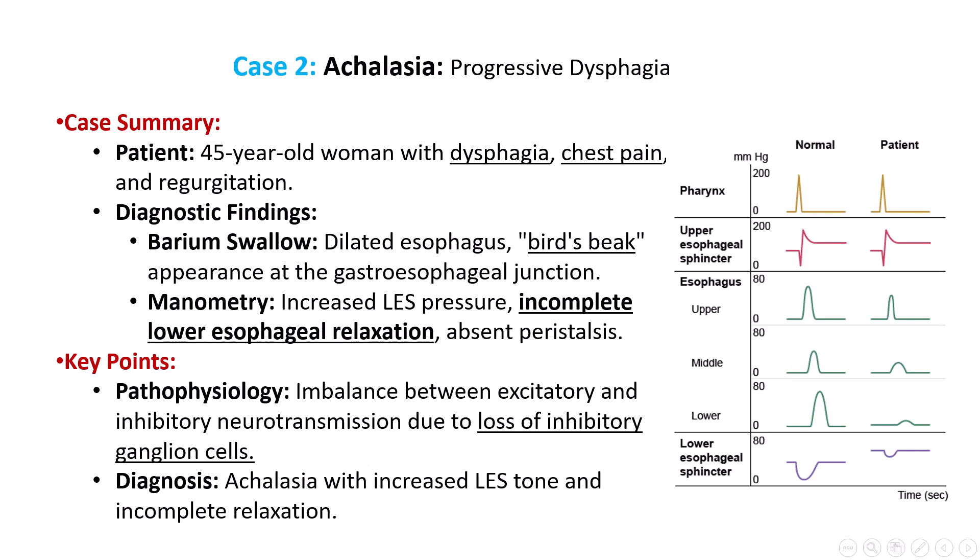In another case, a 45-year-old woman presents with progressive dysphagia to both solids and liquids over the past few months, along with occasional chest pain and regurgitation of undigested food. A barium swallow study reveals a dilated esophagus with a bird's beak appearance at the gastroesophageal junction. Esophageal manometry shows increased LES pressure with incomplete relaxation and absent peristalsis, highlighting achalasia, where loss of inhibitory ganglion cells in the myenteric plexus causes increased esophageal tone and impedes the passage of food into the stomach.